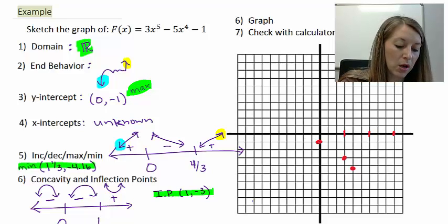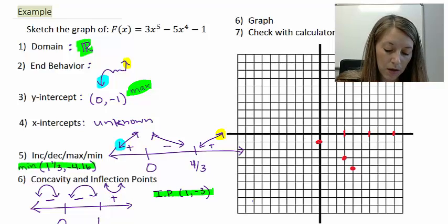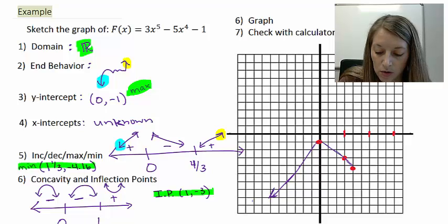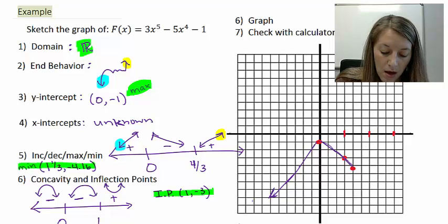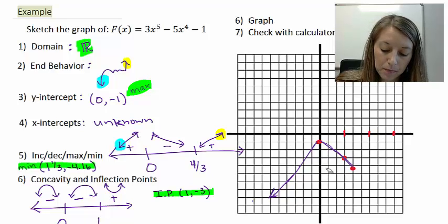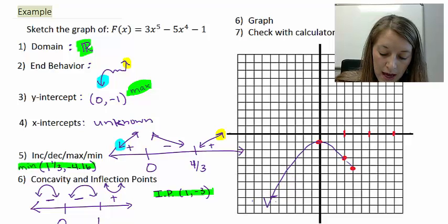And now I can fill it in with what I know about increasing, decreasing, and concavity. So I know that I'm increasing up to zero, and then down between zero and four-thirds or one and one-third, so shaping it like this. But I also know that it's concave down between zero and one, so I need to make this image into a down motion. So there's that.